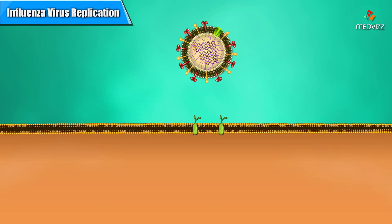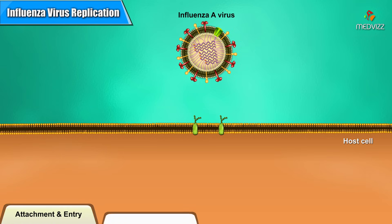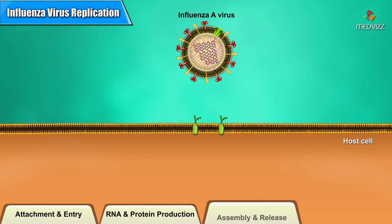The flu is a contagious respiratory infection caused by influenza viruses. Like all viruses, influenza must gain entry into host cells to replicate. The process involves several stages, from attachment and entry to viral RNA and protein production, to assembly and release from the host cell.